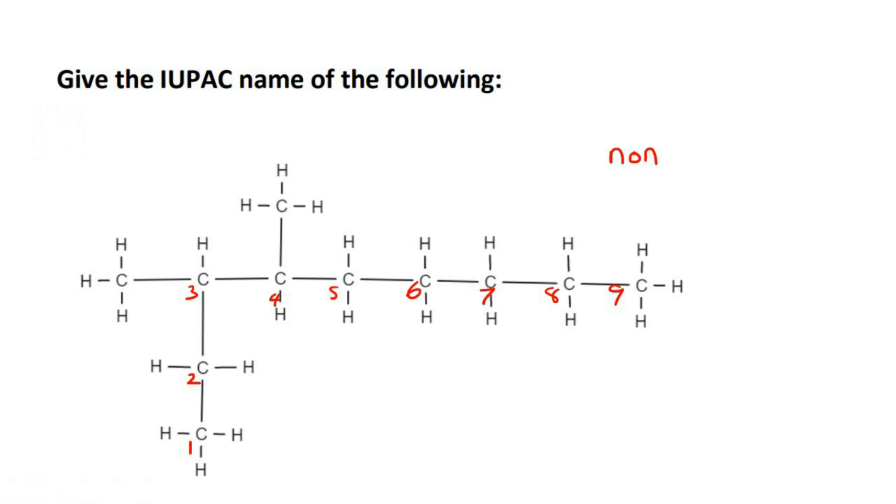So let's see what branches we have. So on carbon three, it's a one carbon branch. And on carbon four, it's also a one carbon branch. So one means meth. So the way we'll do this is we'll say that on carbon three and on carbon four, there is a methyl like that. And then because there's two of them, you're going to have to add the word dimethyl.